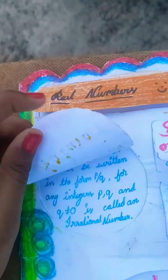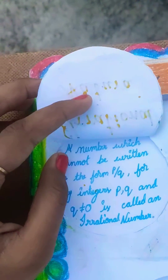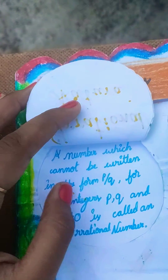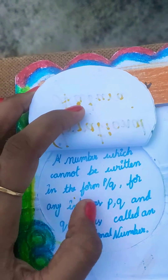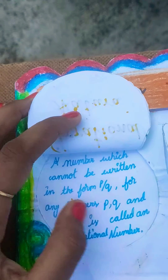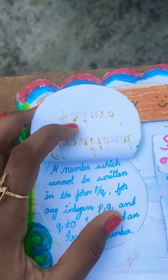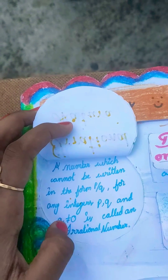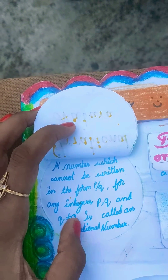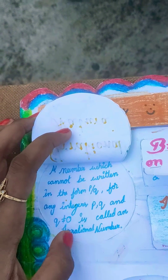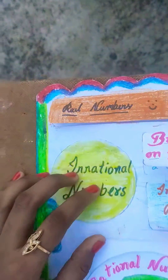Irrational numbers. A number which cannot be written in the form of P by Q for any integer P, Q, and Q not equal to 0, is called an irrational number.